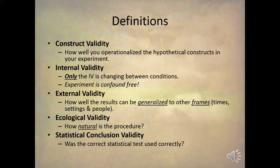Ecological validity is how natural the procedure is — that is, how typical or everyday the procedure or behaviors of the subjects in the experiment are. Some experiments are very artificial; they're done in a laboratory where subjects are doing things that are frankly bizarre. Those studies lack ecological validity.